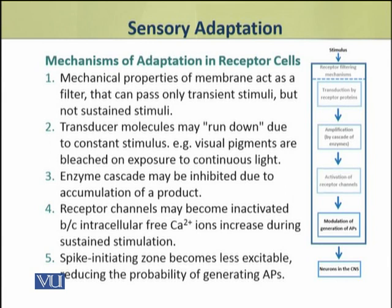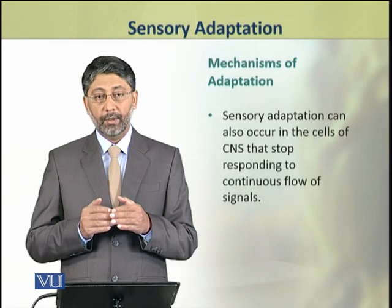The fifth mechanism at the receptor level takes place at the spike initiating zone, which becomes less sensitive. In neurons, the spike initiating zone is where action potentials are generated. If this zone becomes less excitable, the ability to generate action potentials is reduced.